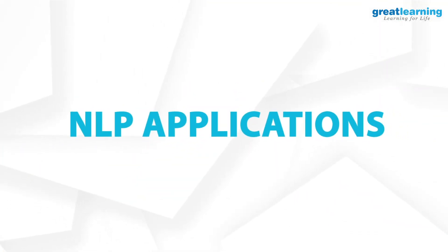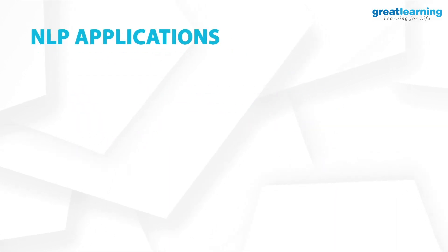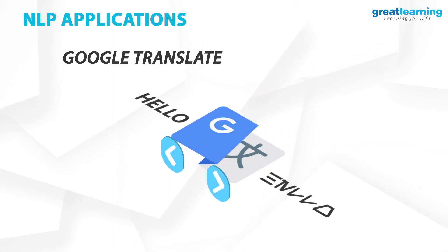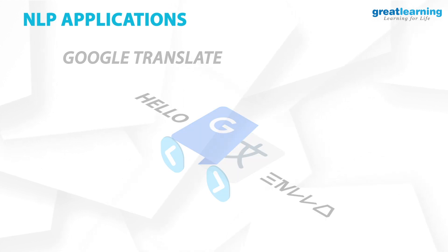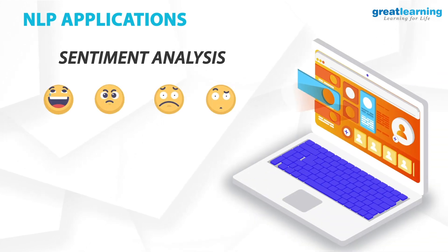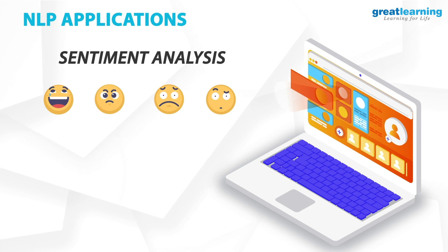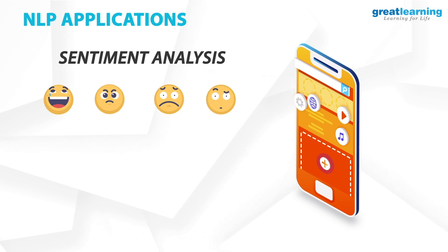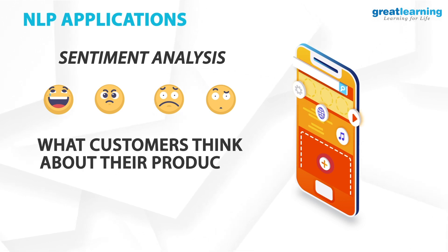NLP can be very useful to us in numerous ways. One use is Google Translate, a language translation application that makes use of NLP and helps translate one language to another. Another application is sentiment analysis, whose goal is to identify sentiments among social media posts, or even in a post where emotion is not always explicitly expressed. Companies use NLP to understand what customers think about their products and services.